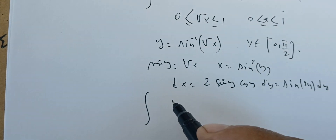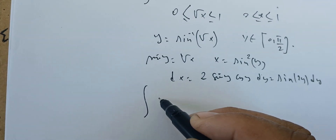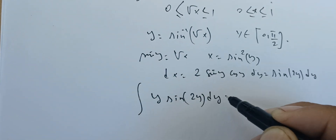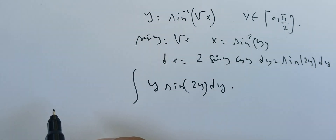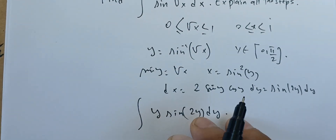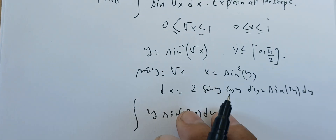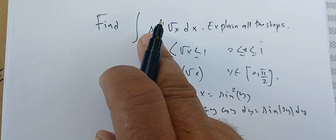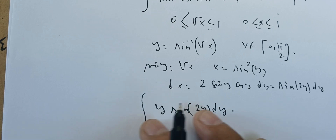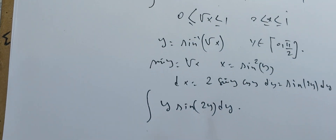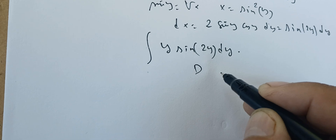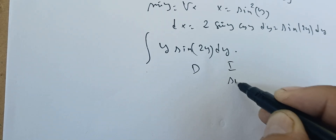Our integral is now ∫y·sin(2y) dy. This is a simpler integral to work with. We'll use the tabular method of integration by parts, differentiating y and integrating sin(2y).